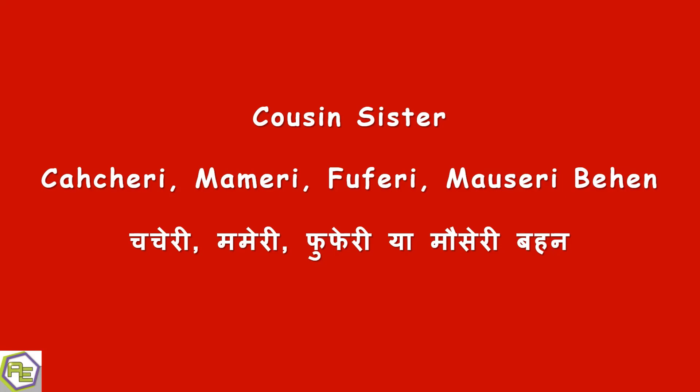Jaise hum English mein sirf ek cousin sister use karte hain, but Hindi mein hum according to relation unke liye different names use karte hain — jaise Chacheri, Mameri, Phufheri aur Mauseri behen. Chacha ki ladki ko Chacheri behen, mama ki ladki ko Mameri behen, buwa ki ladki ko Phufheri behen, aur mausi ki ladki ko Mauseri behen kehte hain.